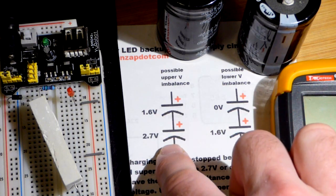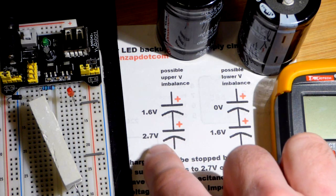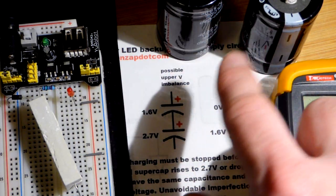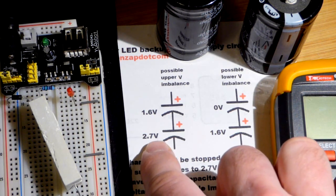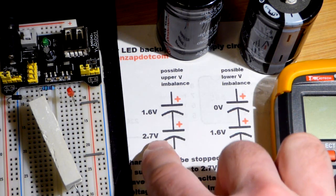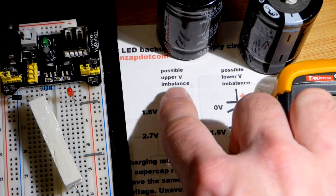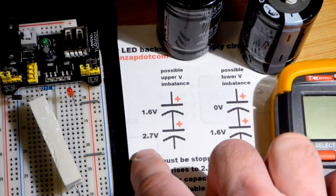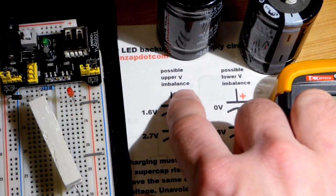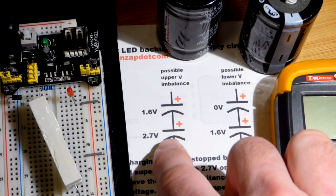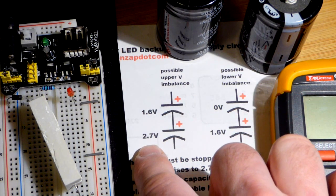Worst case scenario if we charge these up to 4.3 volts, you don't want to exceed 2.7 volts on either capacitor. A somewhat acceptable upper voltage imbalance when charging is that one will be 2.7 volts and one will be 1.6 volts.